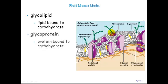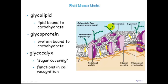We also have glycoproteins — this is where we have a carbohydrate group bound to a protein. The purple blobs seen throughout this model are all proteins. Together, these carbohydrates stick up from the top of the cell, creating a layer called the glycocalyx — basically a sugar covering. This allows cells to recognize one another, as the carbohydrates of different cells are going to be unique markers.